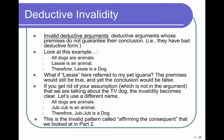Look at this example, but don't be fooled. All dogs are animals. Lassie is an animal. Therefore, Lassie is a dog. Now, it might look good, but it's invalid. The reason it looks good is because both premises are true. But Lassie is a dog — the conclusion — does not really follow from the premises, because the only information we have about Lassie in this argument is that Lassie is an animal. What if Lassie here referred to my pet iguana? The premises would still be true, and yet the conclusion would be false. You have to get rid of your assumption that we're talking about the TV dog named Lassie. If we change it to Jub-Jub: all dogs are animals, Jub-Jub is an animal, therefore Jub-Jub is a dog — it becomes obviously an invalid pattern, specifically the pattern called affirming the consequent that we looked at in part 2.